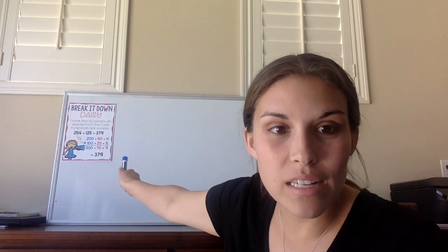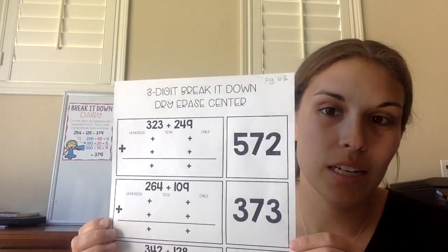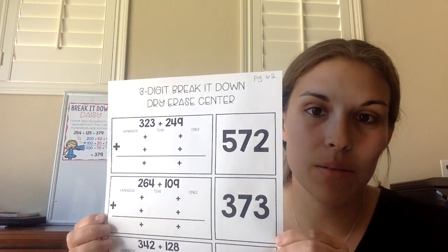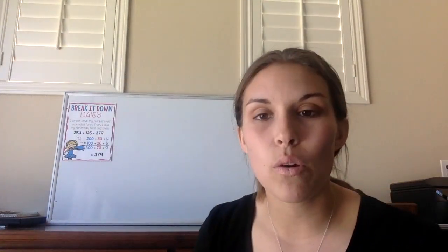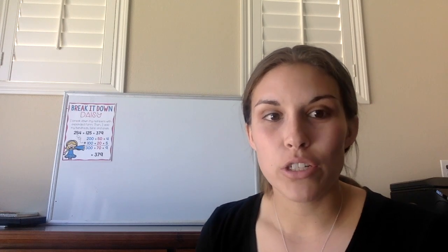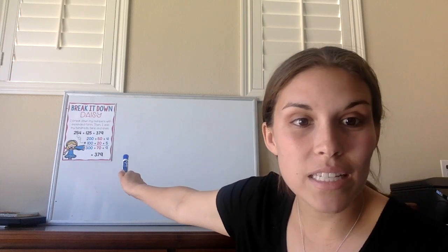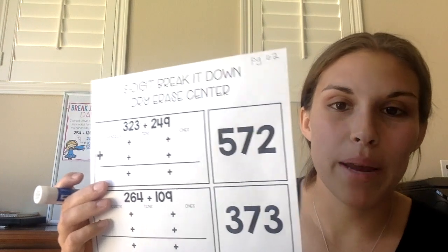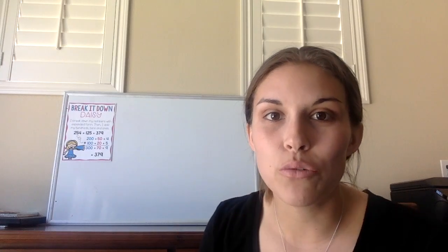So before we begin, there are a few items you're going to need for this lesson. From your packet, whether you printed it or picked it up at El Toro, you're going to need the Break It Down Daisy poster. You're going to need page 62 from your packet, and you're also going to need a pencil or a dry erase marker to write with. So go ahead and pause the video now, grab those items, and come right on back.